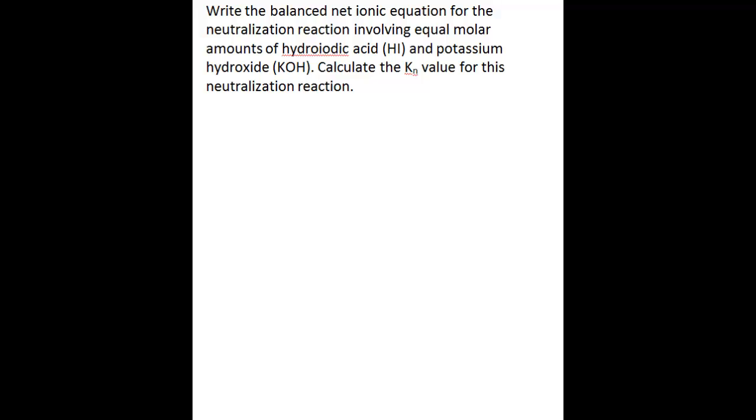In order to do this, you have to be able to write the balanced net ionic equation. This example will show a neutralization reaction case involving a strong acid and a strong base. The problem we're asked to solve here is write the balanced net ionic equation for the neutralization reaction involving equal molar amounts of hydroiodic acid (HI) and potassium hydroxide (KOH). Then, calculate the Kn value for this neutralization reaction.